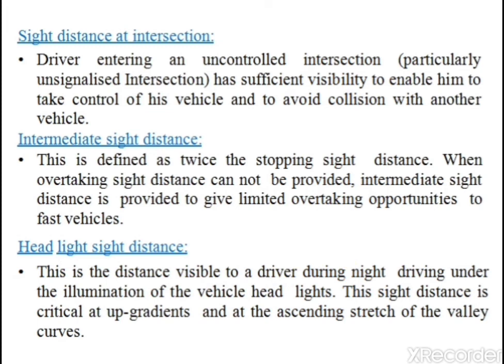The last type is headlight sight distance. This is the distance visible to a driver during night driving under the illumination of vehicle headlights. This sight distance is critical at up-gradients and at ascending steps of valley curves. During night driving, a driver can only see as far as the headlight illuminates, making this sight distance especially important at valley curves and gradients.